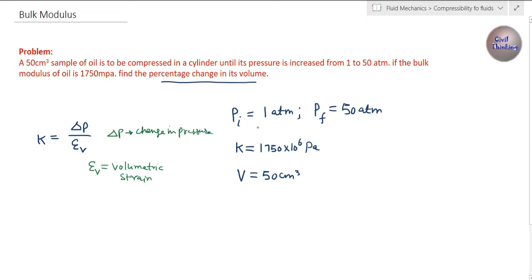Initial pressure is 1 atmosphere and final pressure is 50 atmosphere. The change in pressure is final pressure minus initial pressure, which equals 50 atmosphere minus 1 atmosphere, which is 49 atmosphere.